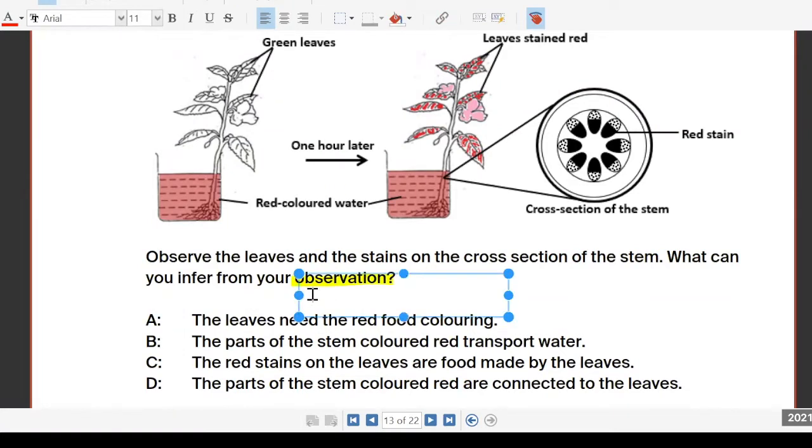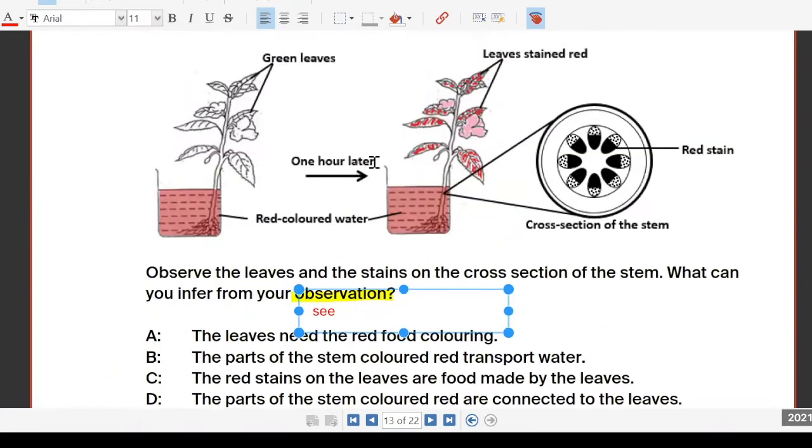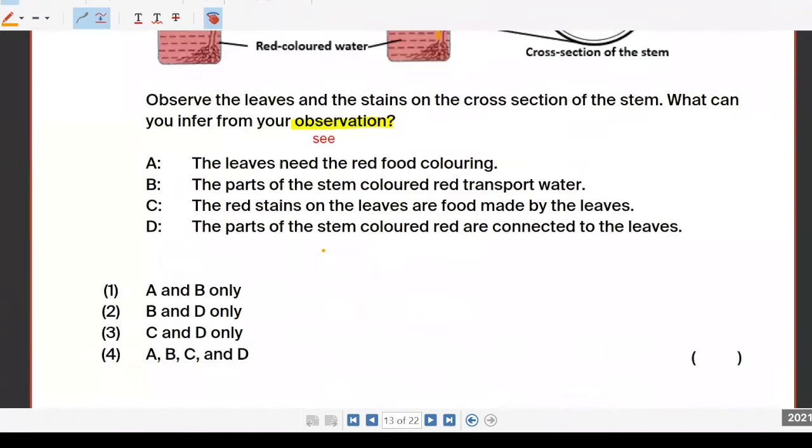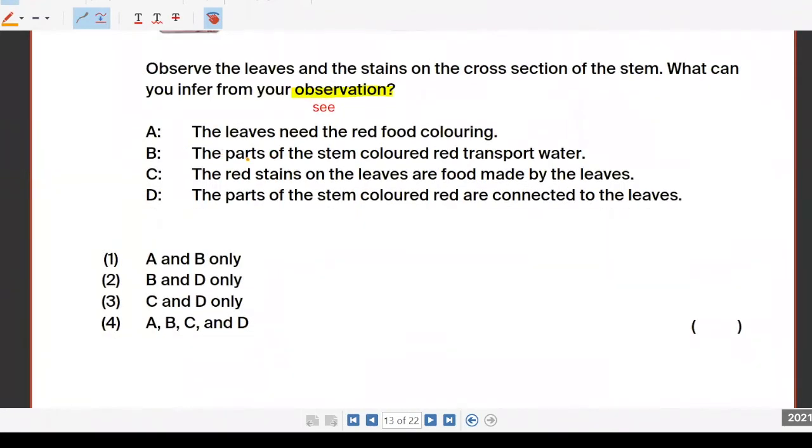What can you see here? Observe that the leaves are stained. That means the roots will have absorbed the water, the red colored water, and will have transported up the water carrying tubes to the leaves and other parts of the plants. So all of you choose number two, B and D.